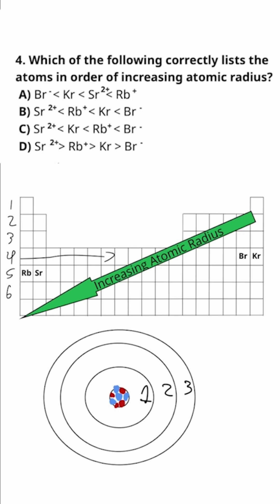And as you go across the row, you're increasing the number of protons. And as the number of protons in the nucleus of an atom increases, it has a stronger pull on the valence electrons, which brings them closer to the nucleus of the atom and decreases the atomic radius.